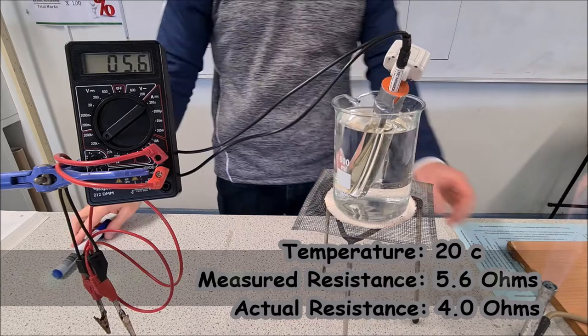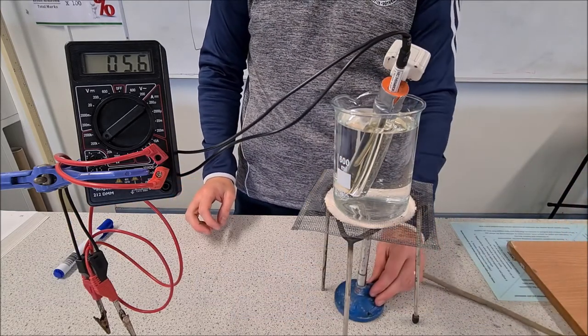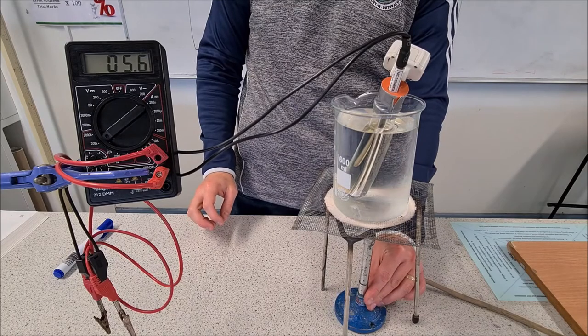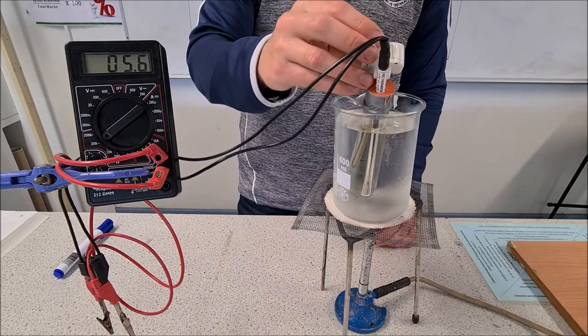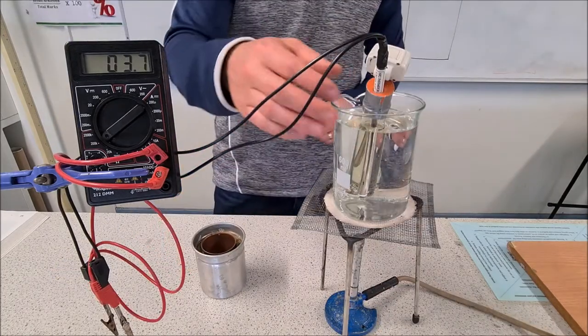So now we're going to start heating this up by about 10 degrees each time. We're going to heat it up slowly and measure the resistance every 10 degrees. We're at 30 degrees now.